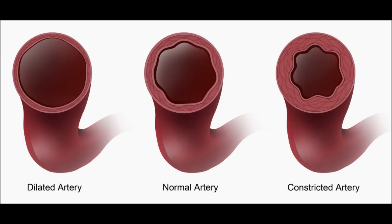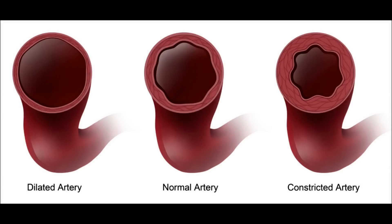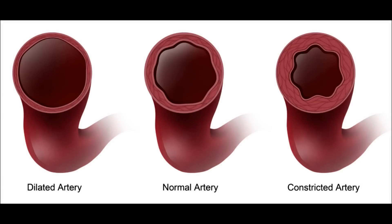If your answer is number four — constriction of central and peripheral blood vessels causes a decrease in blood pressure — this is not correct because the blood pressure increases initially, but then drops because there is a decrease in cardiac output.